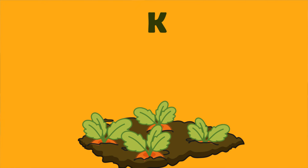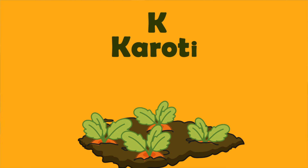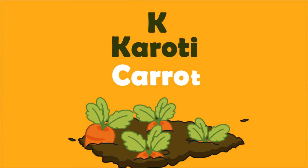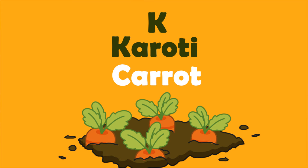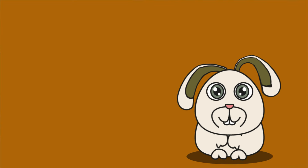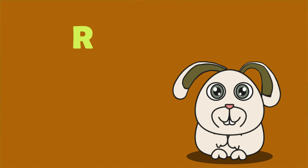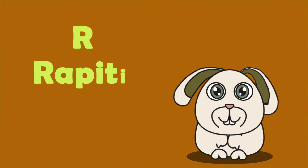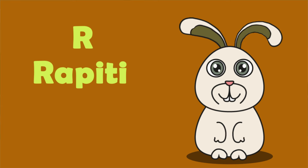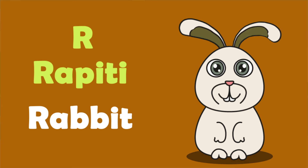Ka for caroti — that means carrot. Ra for rabbit — that means rabbit.